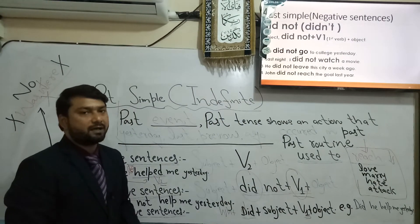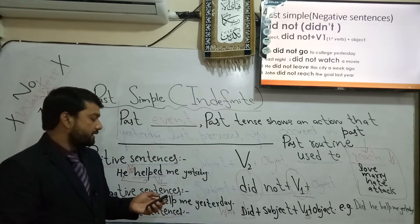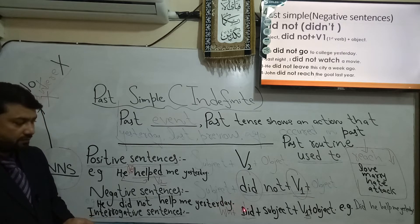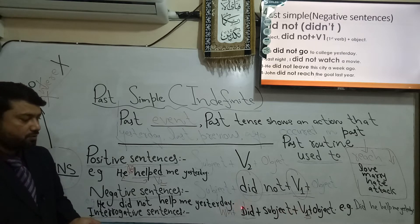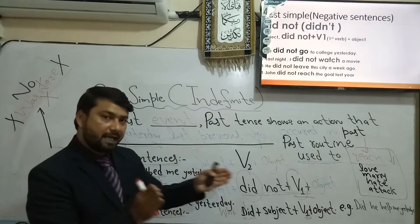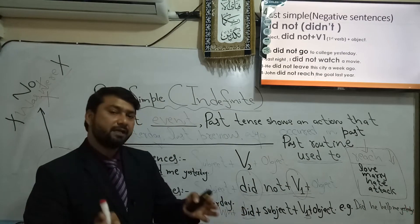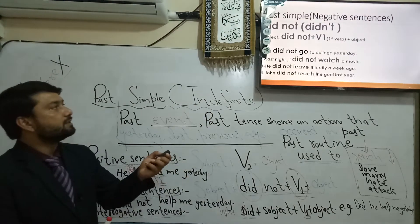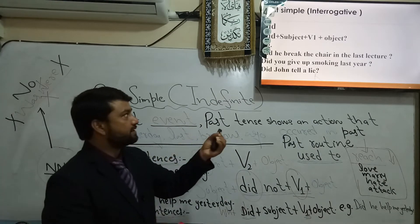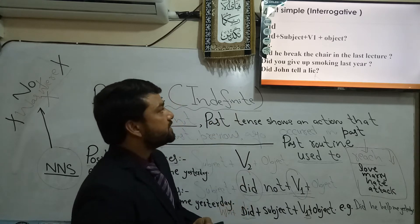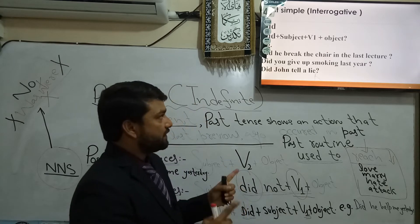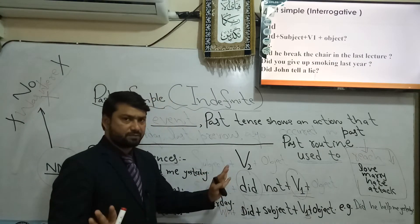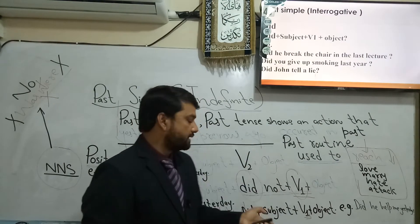For example, 'he attacked on me' is incorrect — say 'he attacked me.' You cannot use 'on' after 'attack' when it is used as a verb. For interrogative sentences, use 'did' at the beginning: Did he help me yesterday? Did you break the chair last night? Did you see a dreadful dream last night? Did he break the chair in the last lecture? Did you give up smoking last year? 'Give up' is a phrasal verb meaning to leave or quit something. Did John tell a lie?